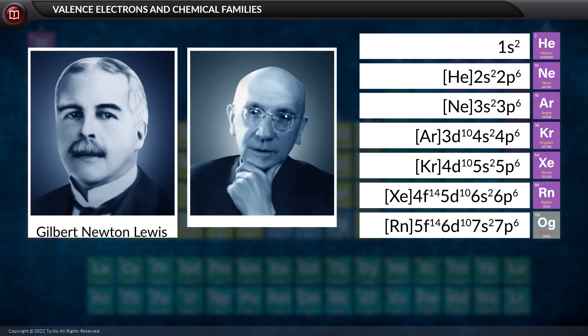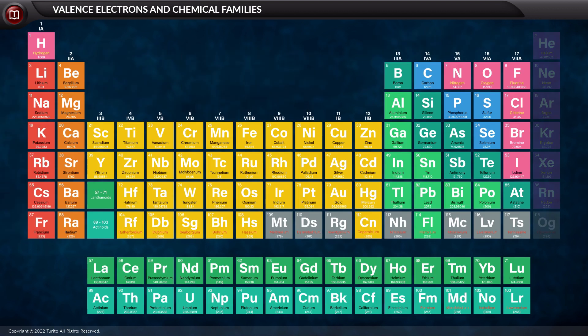Do you know that scientists like Lewis and Kossel explained that the high stability of the noble gases was attributed to their octet electronic configuration, and the atom of every element wants to achieve stability like that of the noble gases?